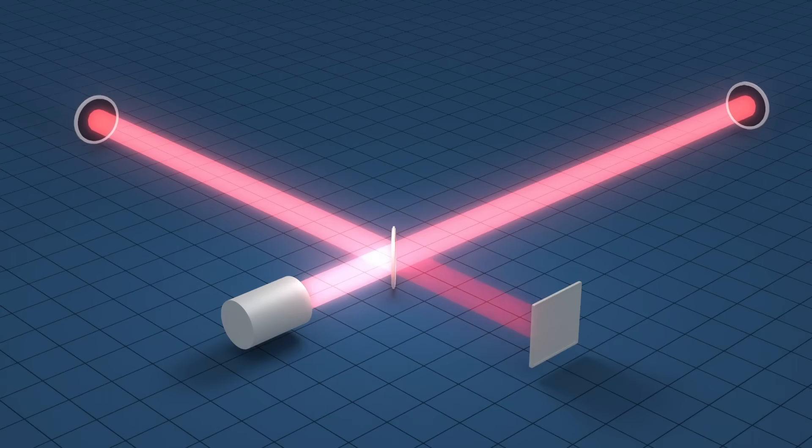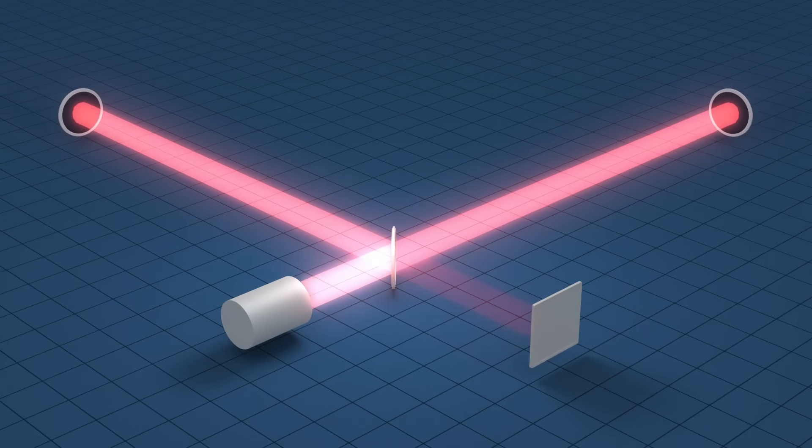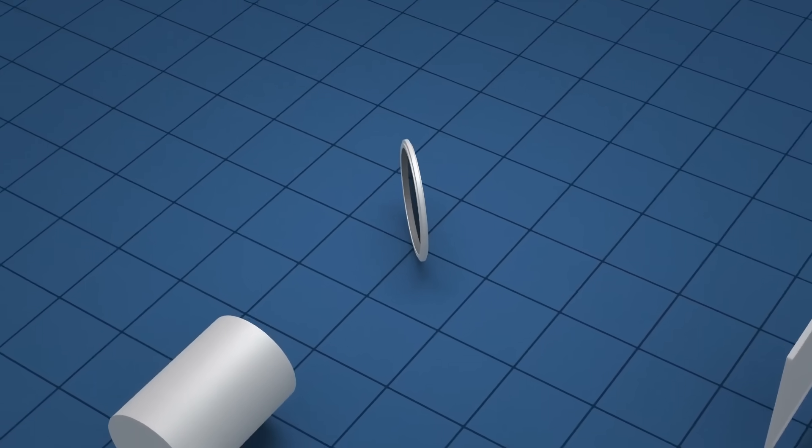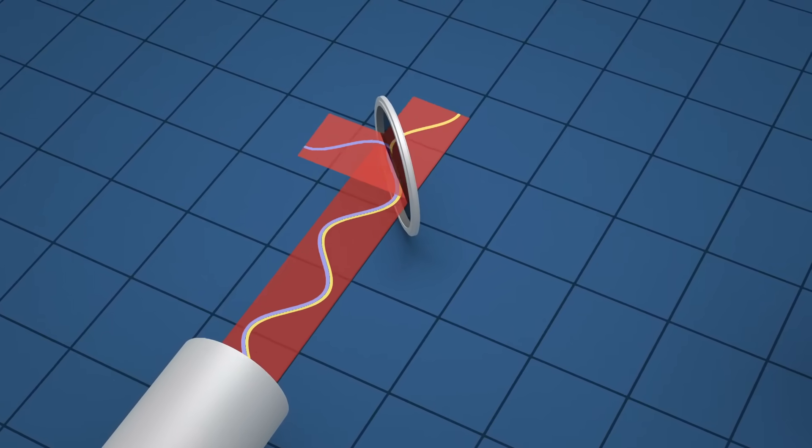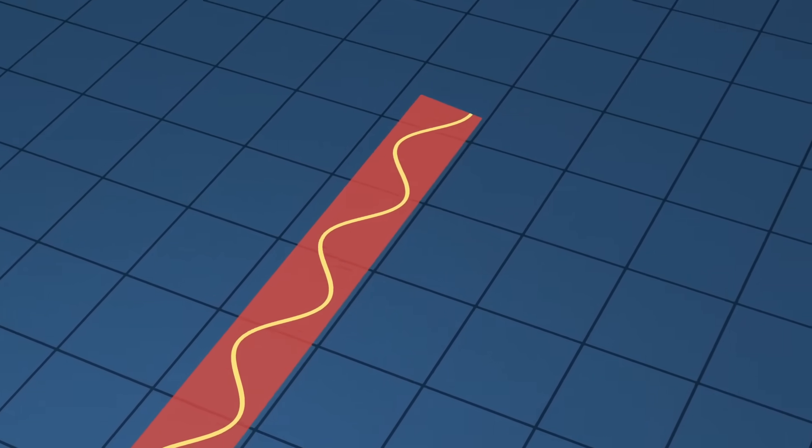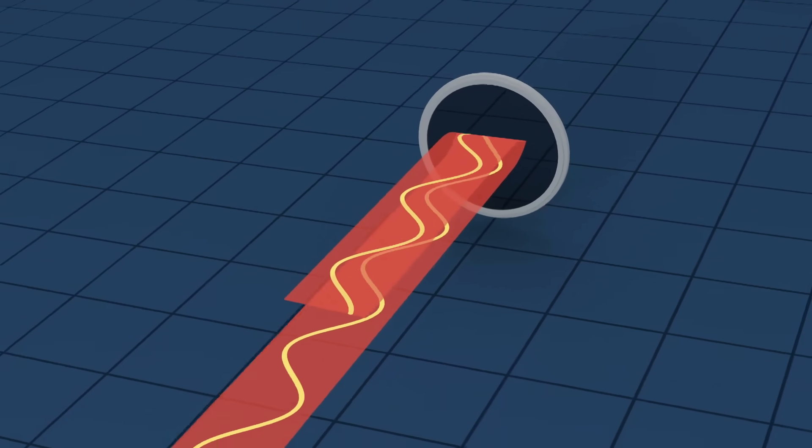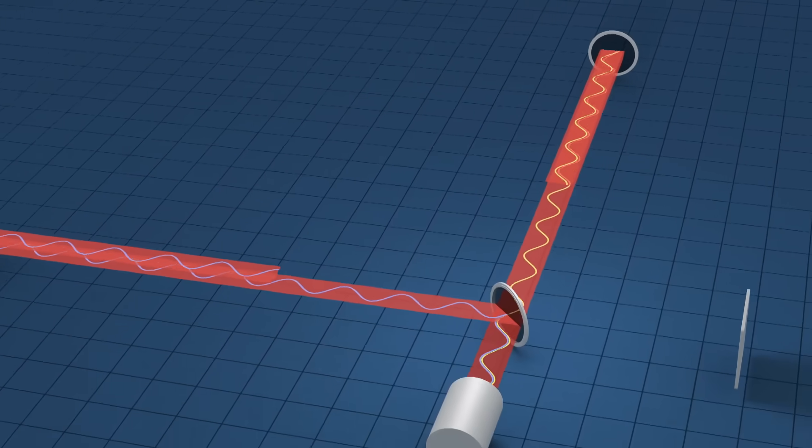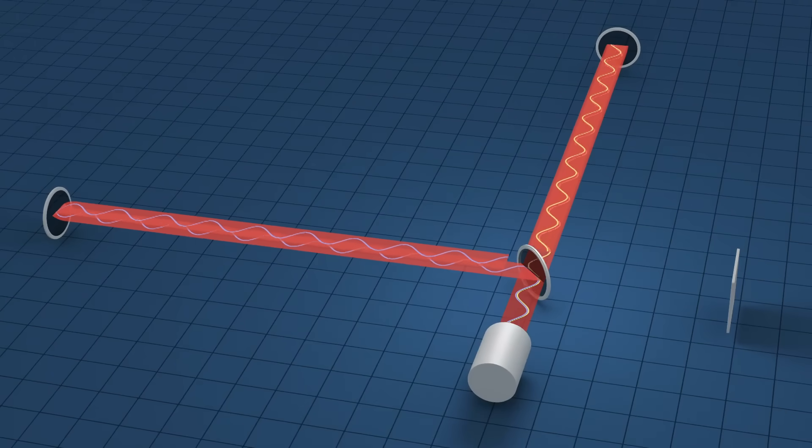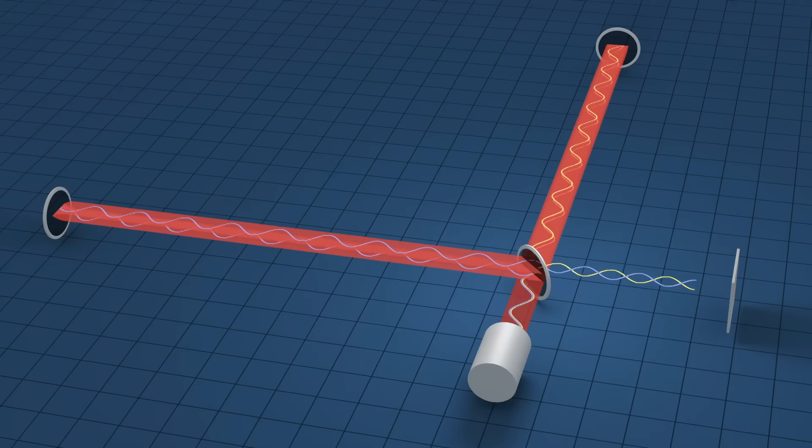Specifically interferometers which used arms several kilometers long that could detect the subtle squeezing and stretching of space-time by the interference of lasers which were sent along each path of the interferometer. As they came back they would be recombined, and if there was any change in the path length that would adjust the phase of the light.